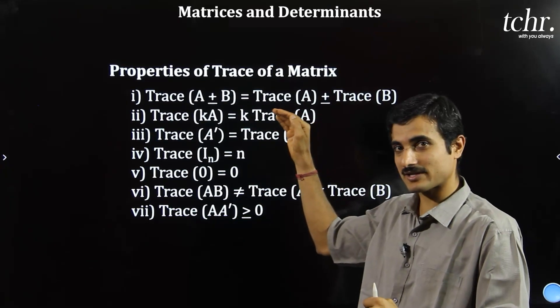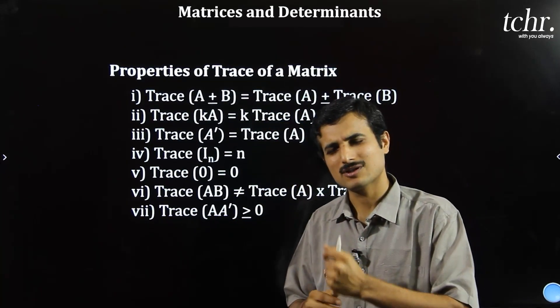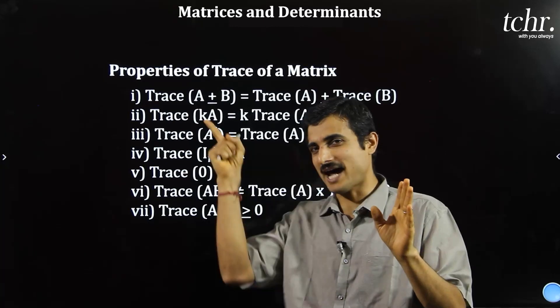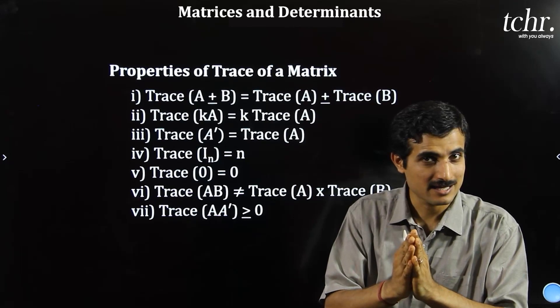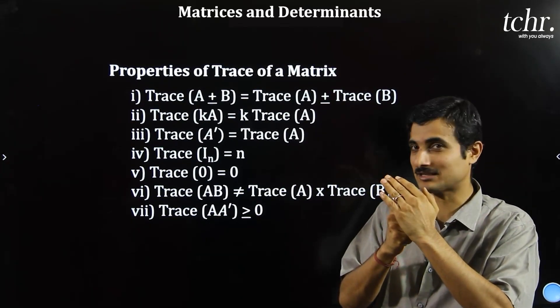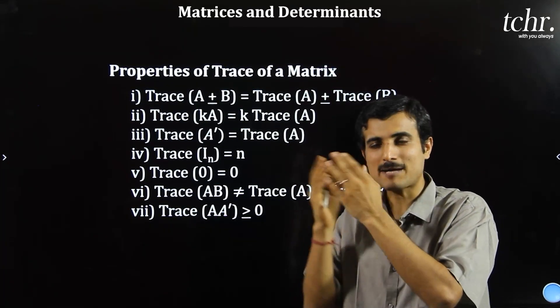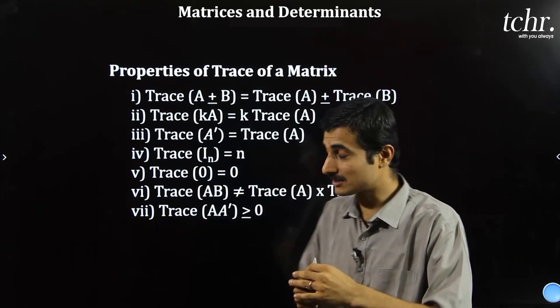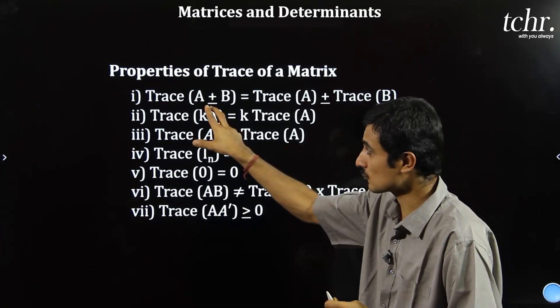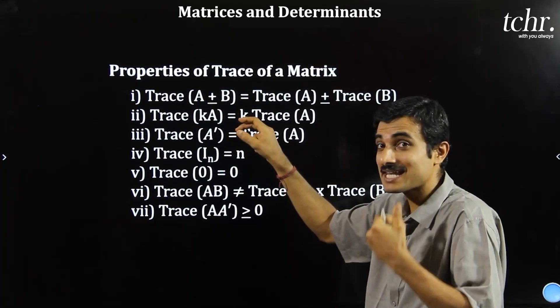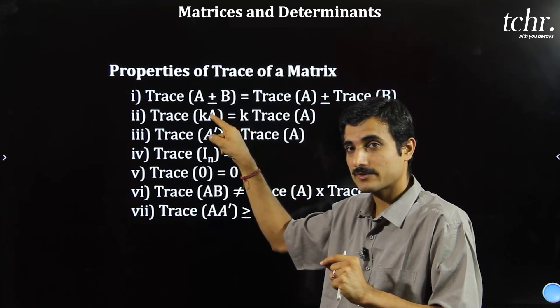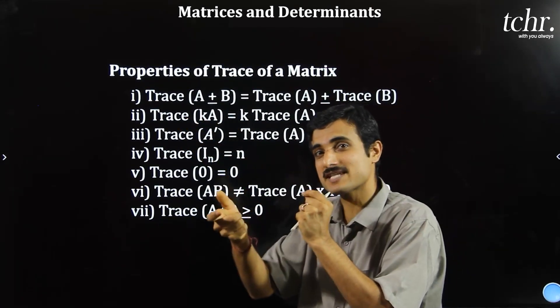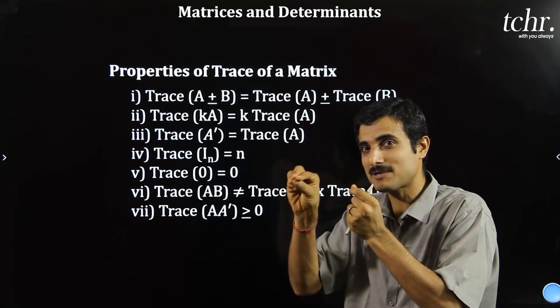Properties of trace of a matrix — trace is very simple. Take any matrix, add all the diagonal elements — that is the trace of the matrix. For example, if diagonal elements are 5, 3, 1 in a 3 by 3 matrix, trace is 5 plus 3 plus 1. Also, trace of k times A — if you multiply a matrix by a number k — then trace equals k times trace of A.